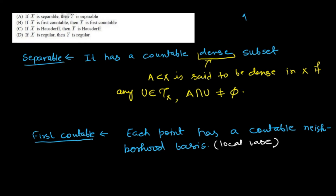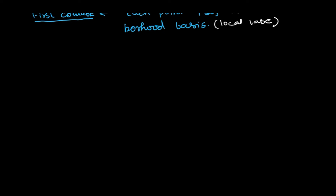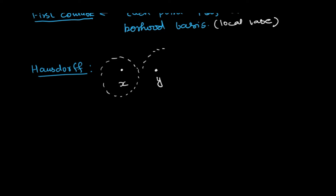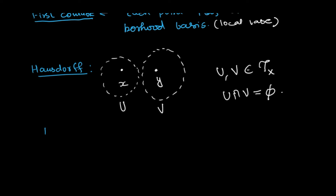The third property is Hausdorff and the fourth is regular. Hausdorff means: for any two distinct points X and Y, there exist two disjoint open neighborhoods U and V in the topology such that U ∩ V is empty. Regular means you have a point and a closed set, and you can separate them by disjoint open sets.